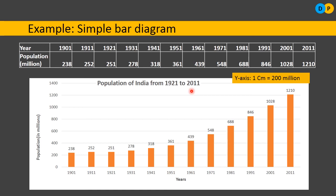In this video, we have studied the different types of diagrams. There are four types: one-dimensional, two-dimensional, three-dimensional, and pictograms and cartograms. Within one-dimensional diagrams, there are four types: simple bar diagram, multiple bar diagram, component or subdivided bar diagram, and percentage bar diagram. In this video, we concentrated only on the simple bar diagram. I hope you have understood this. Thank you.